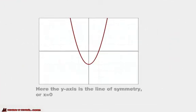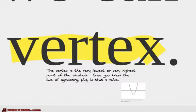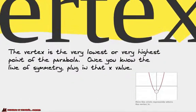Here's an example. Here's the y-axis — it's the line of symmetry, or x equals 0. Notice, this is what cuts that parabola in half. If I were to take it and fold it along the y-axis, it'd be the same exact thing. The other thing we're going to talk about is the vertex, which is the very lowest or highest point of the parabola. Once you know the line of symmetry, you plug that x value in, and that is where the vertex is.